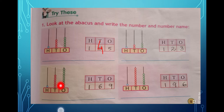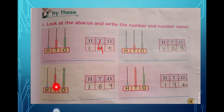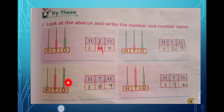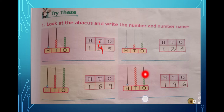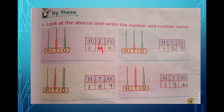For the next abacus, count the ones place: one, two, three, four, five, six, seven, eight, nine — nine ones. Tens place: one, two, three, four, five, six — six tens. And one hundred. So the number is 169. The remaining abacus you count yourself and write it down.